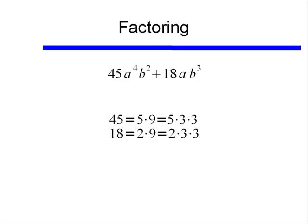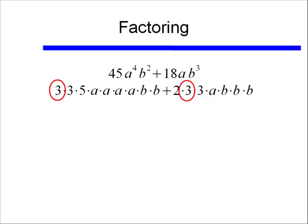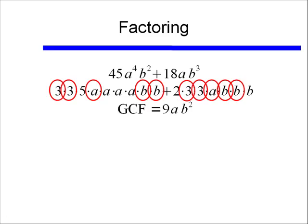Likewise 18, which is 2 times 9, is equal to 2 times 3 times 3. So I've completely factored my numbers, and if I completely factor both my numbers and my variables, then I end up with this. And if I'm trying to find the greatest common factor, I need to find the factors that are in both of these terms. There's a factor of 3 in both of these terms, and there's another factor of 3 in both of these terms. I also see an a in both of these terms and I see 2 b's available in both of these terms. So that means my greatest common factor is 3 times 3 times a times b times b, or 9ab².